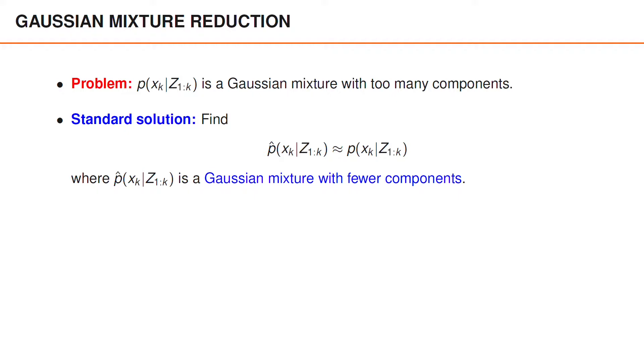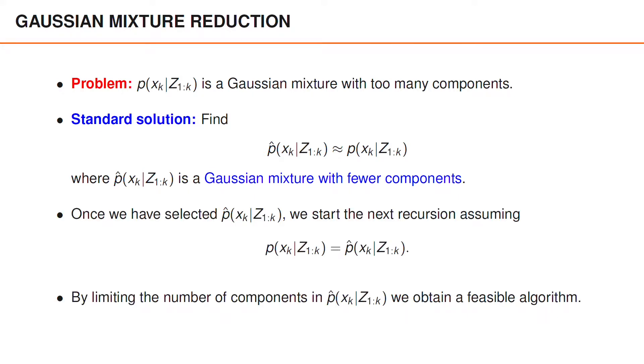We usually seek another Gaussian mixture that approximates the true posterior, but that contains fewer components. By reducing the number of components in every step of the recursion, we can maintain the number of components at a reasonable level, and thereby obtain a tractable algorithm.